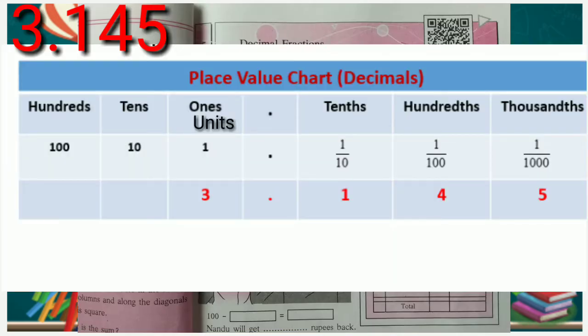Let's look at the decimal number 3.145. Each digit in a decimal number has a place value depending on its position. This table shows place value of that number.